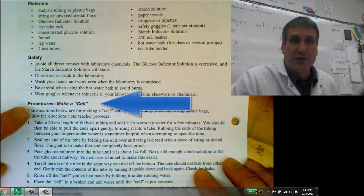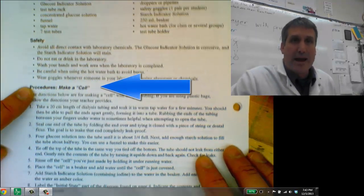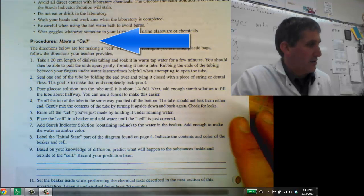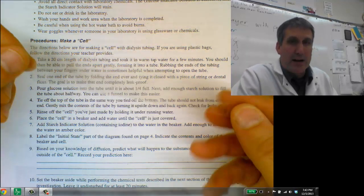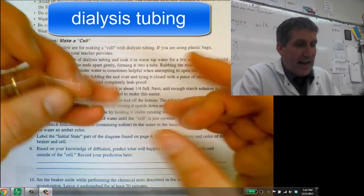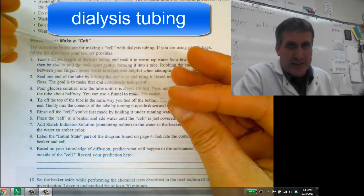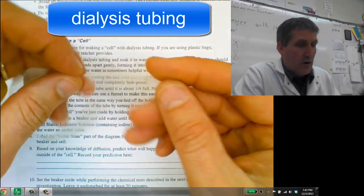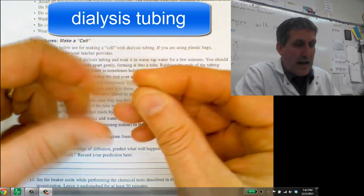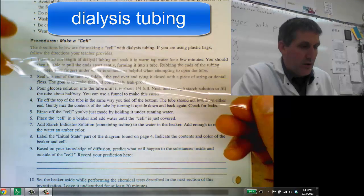The next thing we're going to focus on is the actual procedure for making your model cell. So this is obviously not going to be a living cell. We're going to make a model cell using dialysis tubing, which basically looks like a piece of plastic tape, but when we go back in the lab in a second, we're going to learn how when you get this wet, this actually opens up into a tubing.